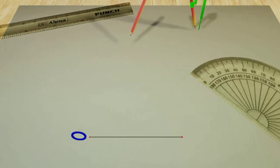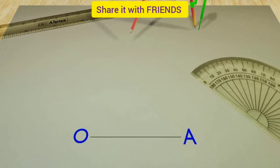The two endpoints are named point O and point A. Next, a pencil compass is taken.